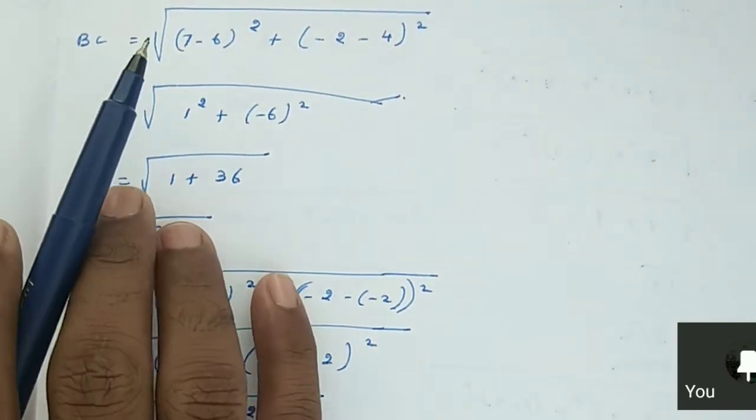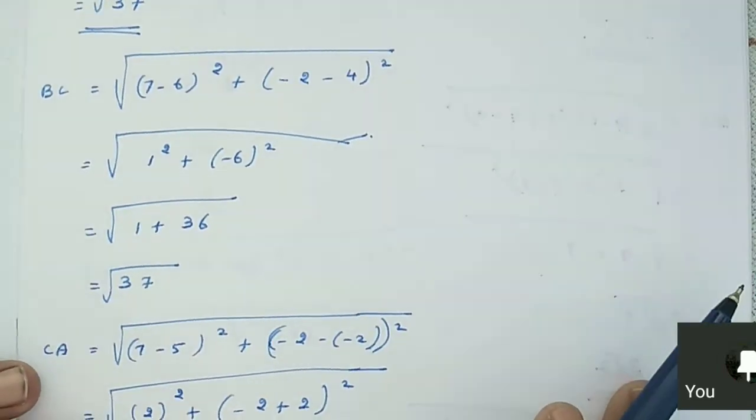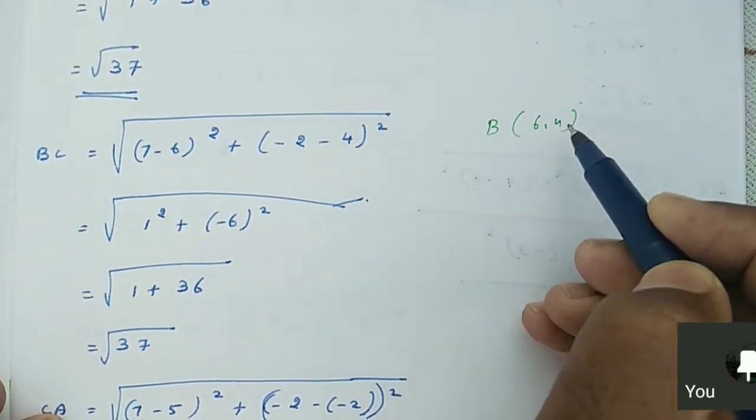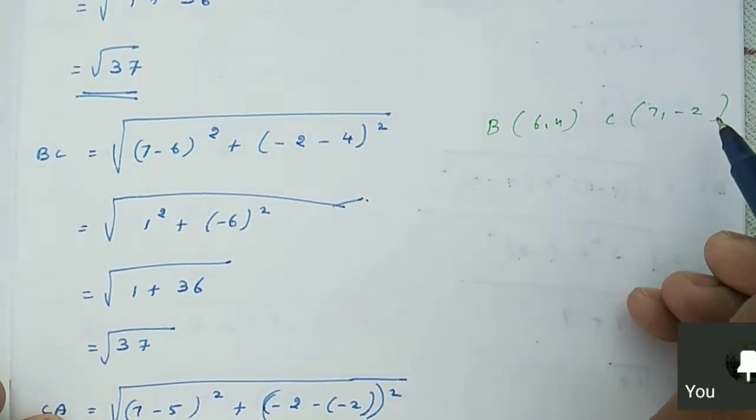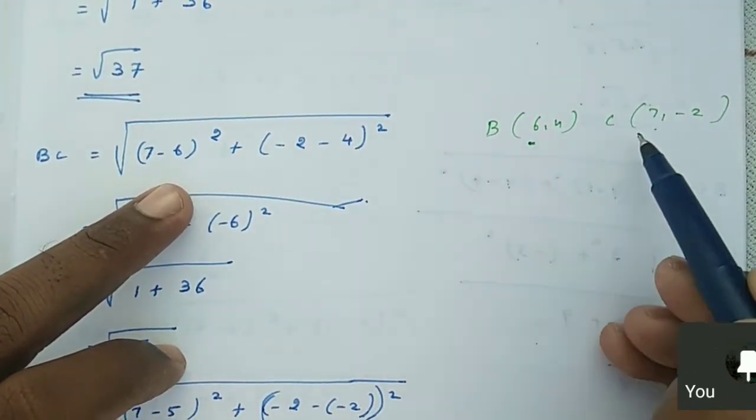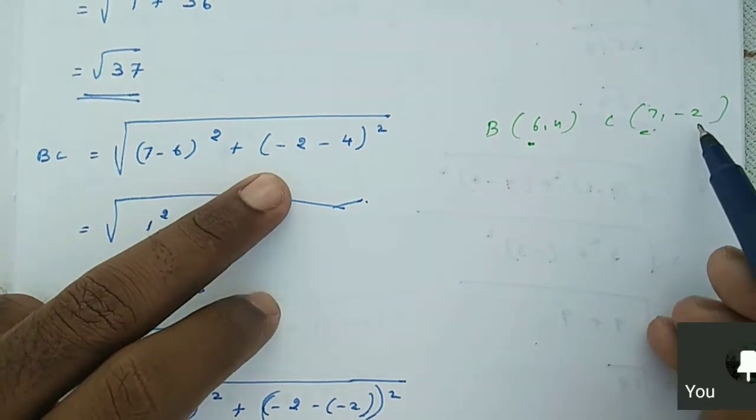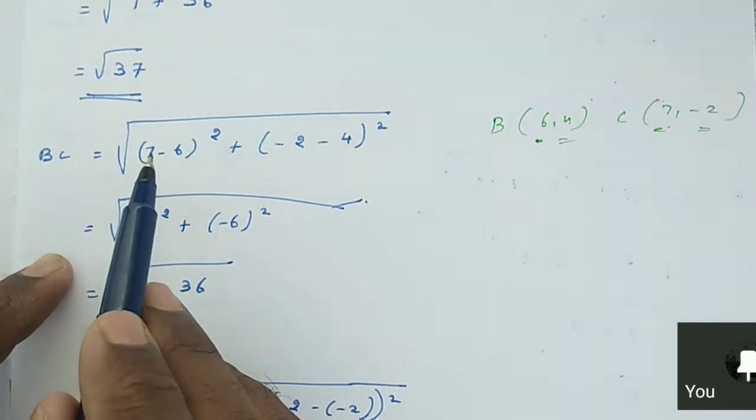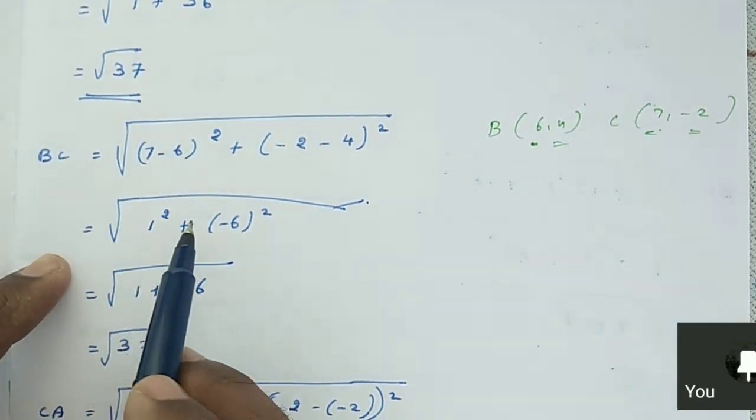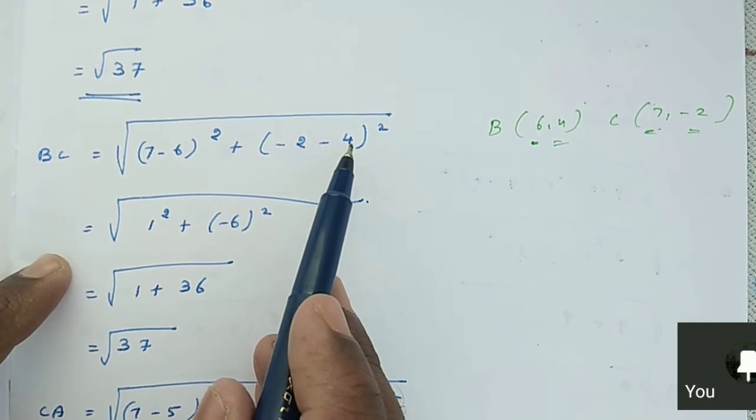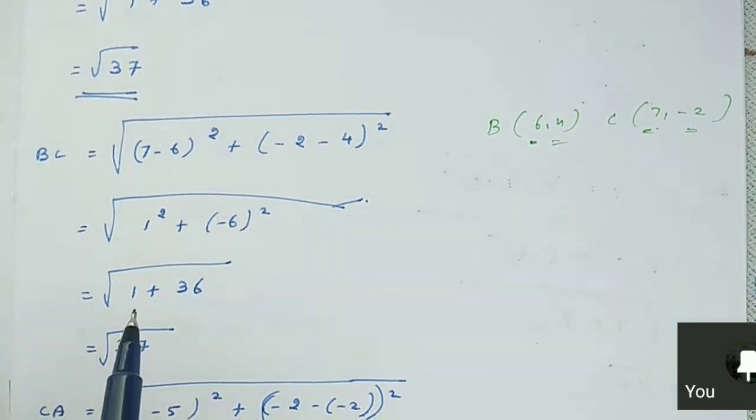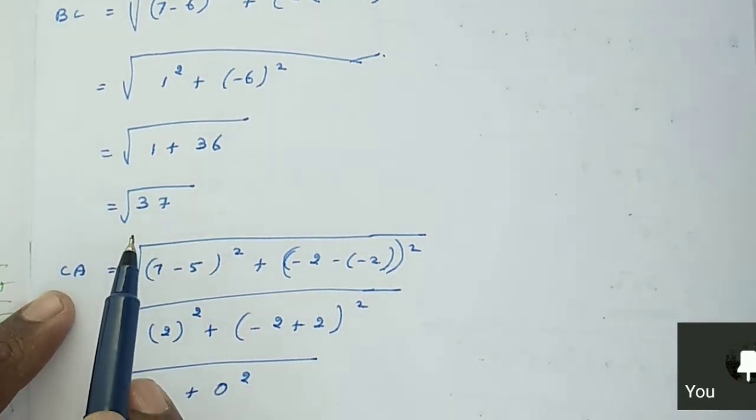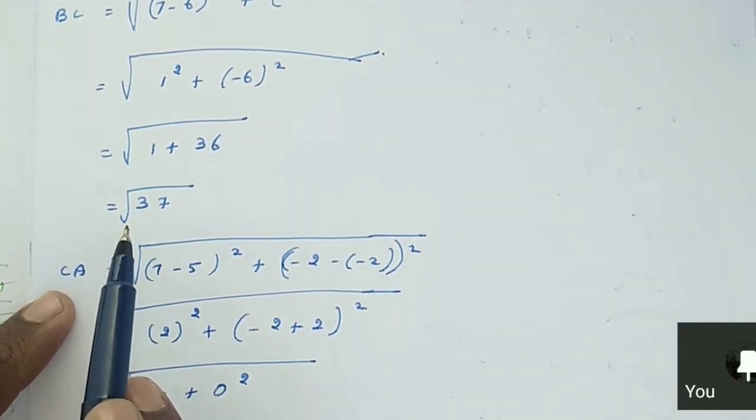Next, we can find the distance of BC. What is the B point? (6,4). Then C point is (7,-2). So BC = √[(7-6)² + (-2-4)²] = √[(1)² + (-6)²] = √[1 + 36] = √37.